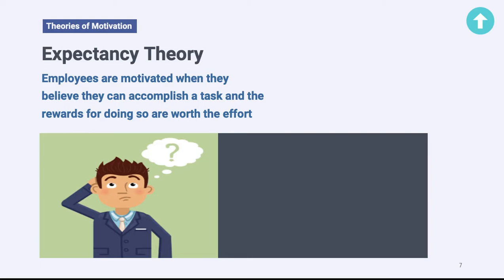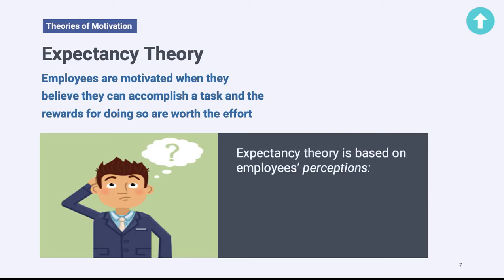Somebody has to believe they are capable of completing a task successfully, and they have to believe that the outcome they get for doing that task is going to be worth the effort or valuable to them. Expectancy theory is made up of three different components and it's based on employees' perceptions. It's not about what reality is — it's about what an employee perceives to be true, and those perceptions influence motivation regardless of whether they are accurate.